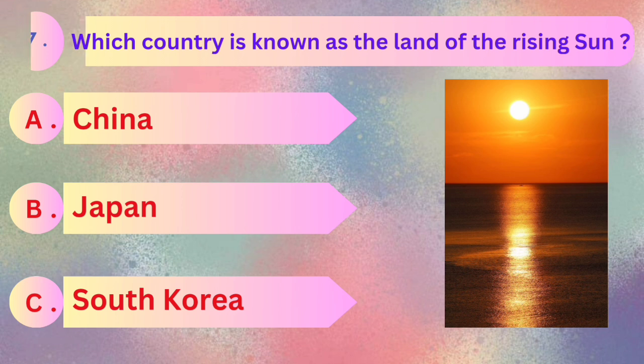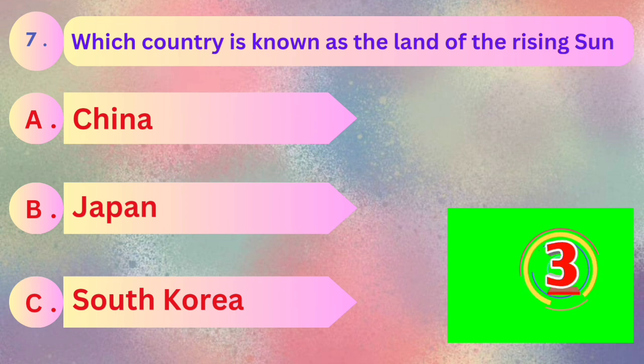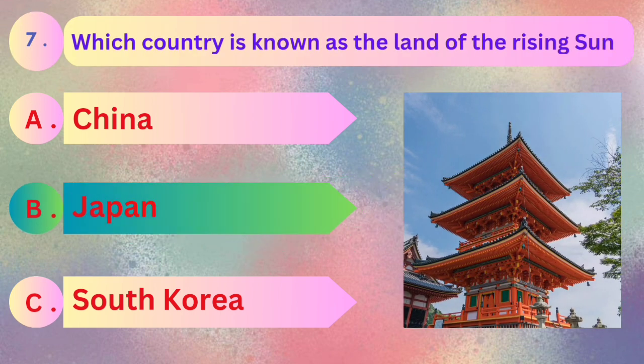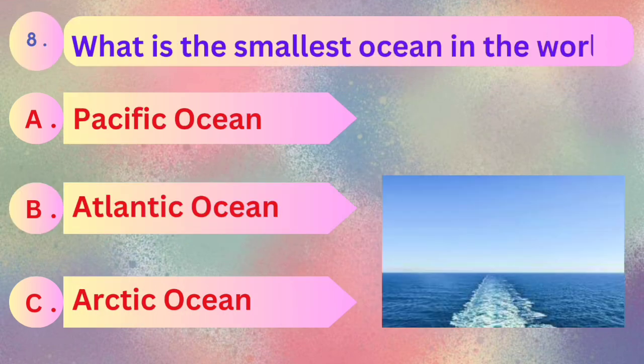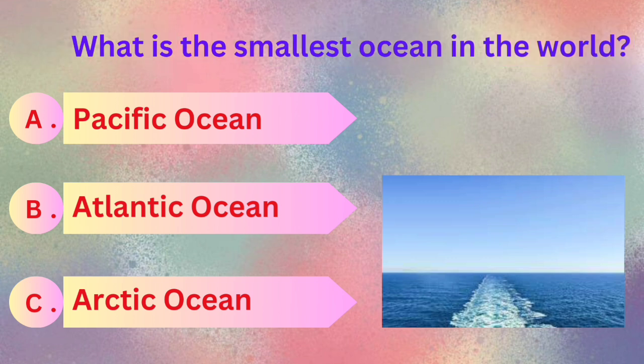Answer is Japan. And next question: what is the smallest ocean in the world? Pacific Ocean, Atlantic Ocean, and Arctic Ocean.